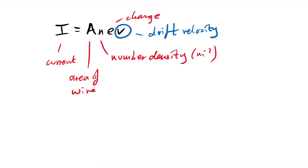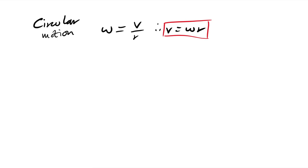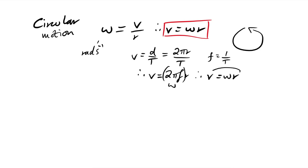Moving into year 13: for circular motion, ω = v/r, or equivalently v = ωr. This links rotational speed to linear speed. It comes from speed = circumference/time period = 2πr/T = 2πfr, where 2πf = ω. Also, ω = 2πf, which converts frequency (whole circles per second) to radians per second.